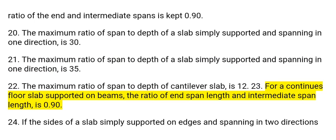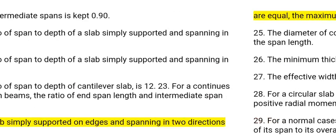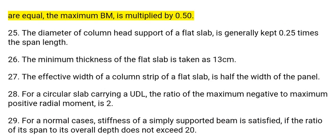23. For a continuous floor slab supported on beams, the ratio of end span length to intermediate span length is 0.90. 24. If the sides of a slab simply supported on edges and spanning in two directions are equal, the maximum BM is multiplied by 0.50.